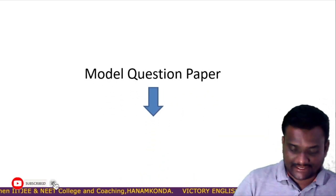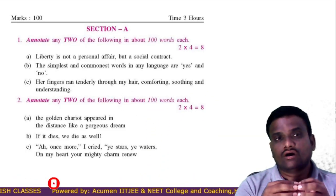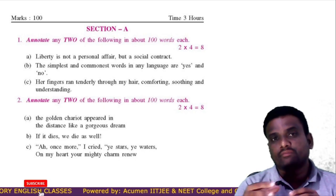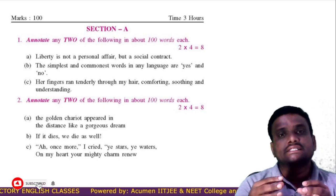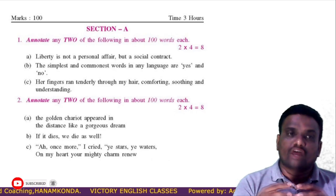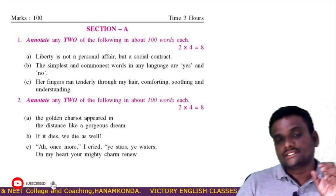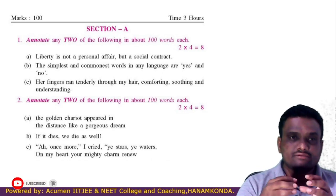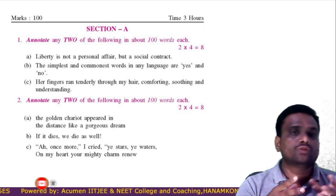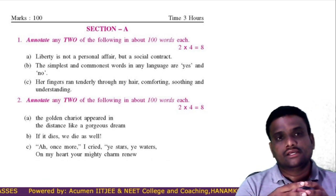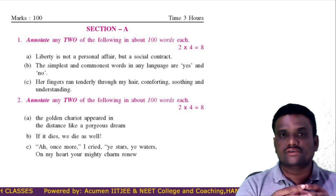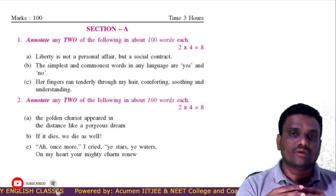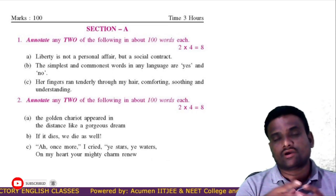Now the question paper pattern. The marks for this question paper are 100 and the duration is 3 hours. Section A has 5 bits — 2 bits are annotations and 3 bits are question answers. The meaning of annotation is adding some information to the given one. Here 3 annotations are given, and if you answer 2 of them correctly, you will be awarded 8 marks.